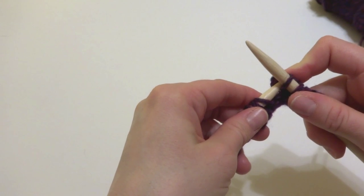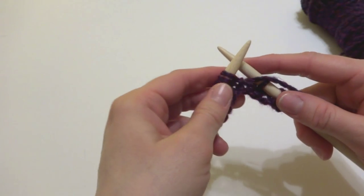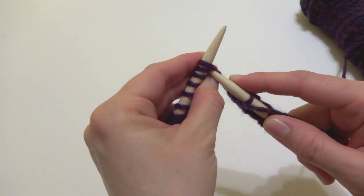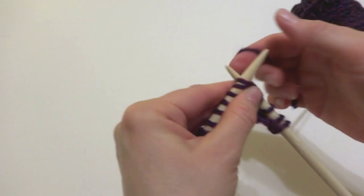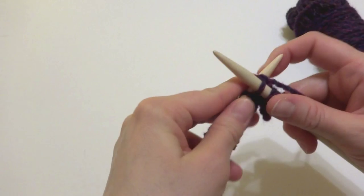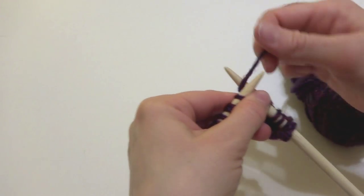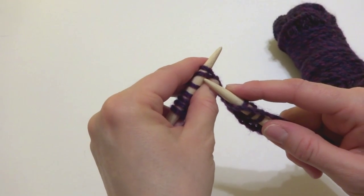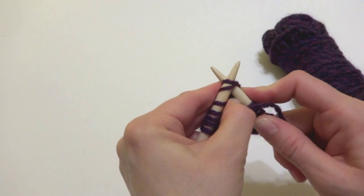There's lots of other ways you can do this. This is super easy. So you're going to yarn over, knit two together. Yarn over, and knit two together.